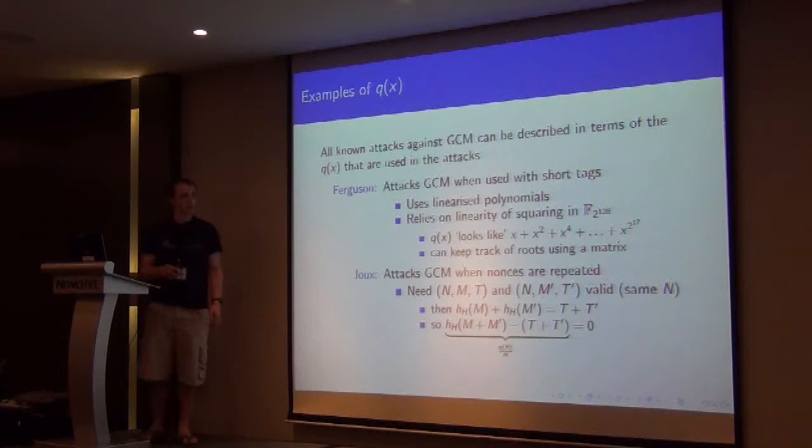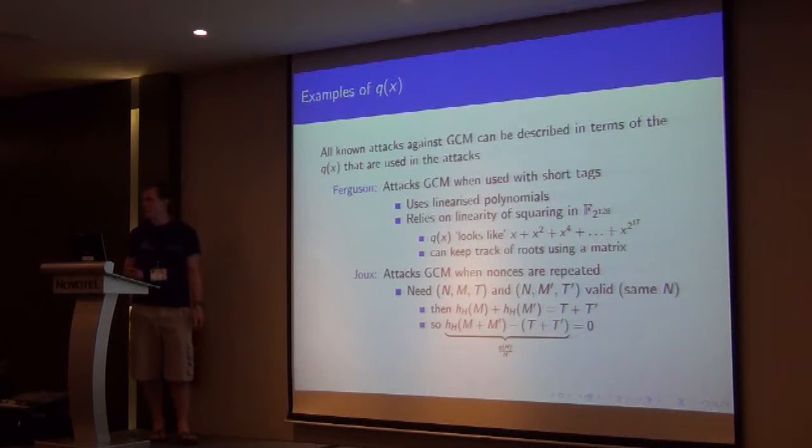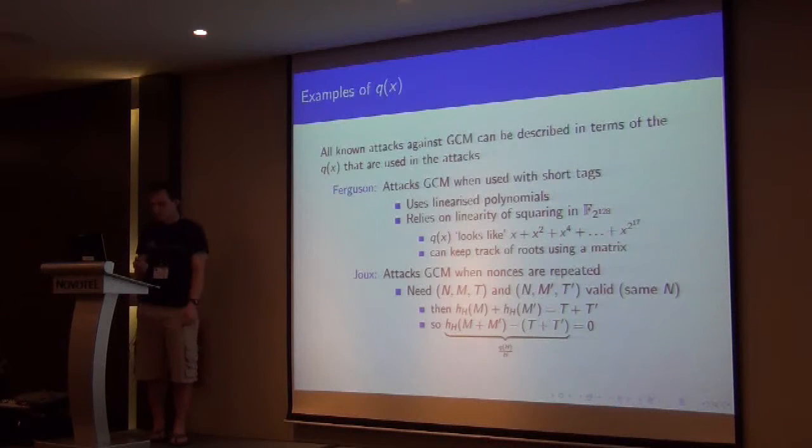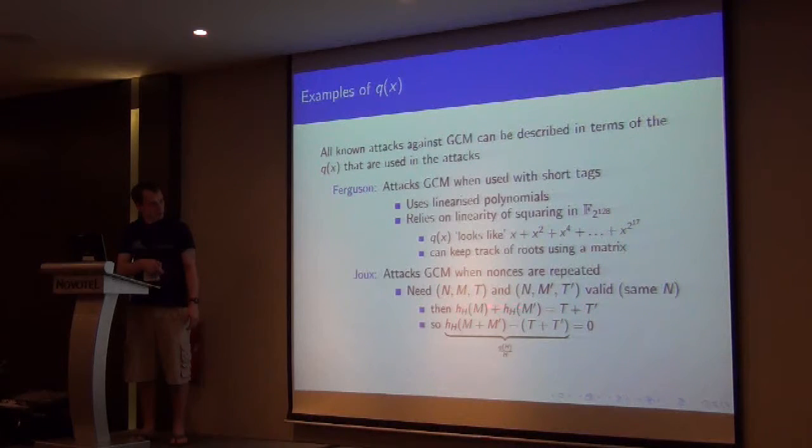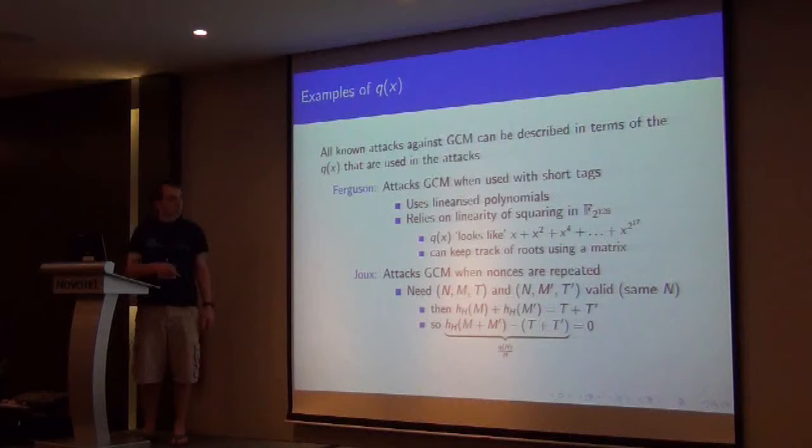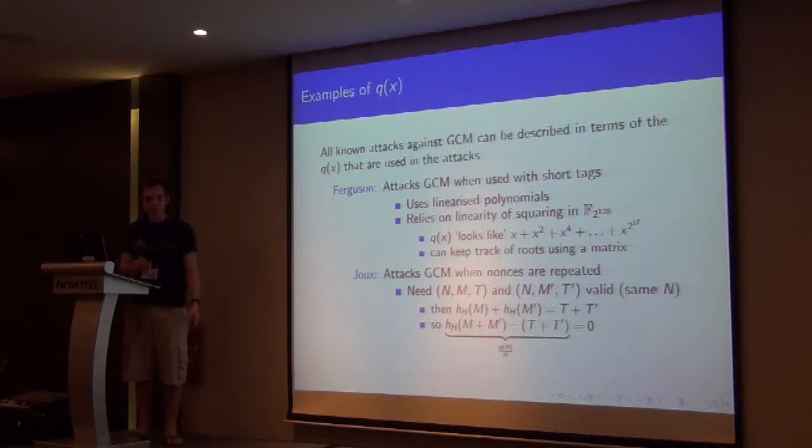Joux's attack on GCM if we repeat nonces. So for this one we need to have two tuples that were both valid with the same nonce. And because in GCM we XOR this encryption of the nonce in, if we XOR the tags together over here, that's the same as XORing the hashes together.